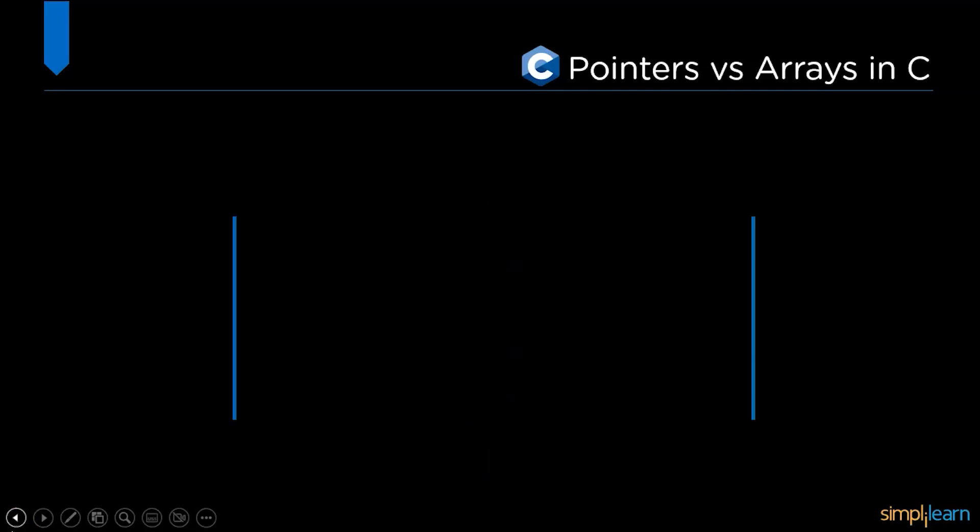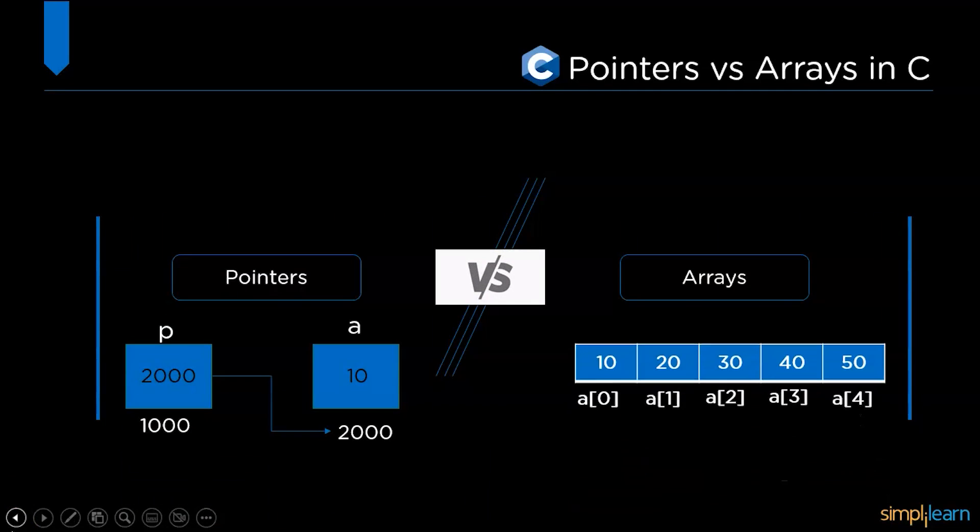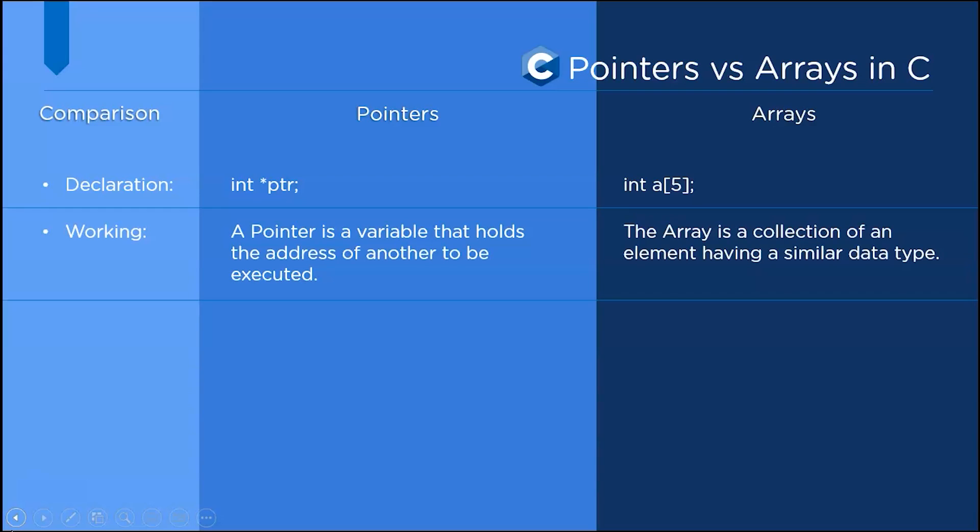Following that, let's see the basic comparison between pointers and arrays in C. First, let's see the declaration. In pointers we have int asterisk pointer - that is the pointer variable - and then in arrays we have int as a data type, a as array name, and the size 5. Then coming to the working: a pointer is a variable that holds the address of another variable to be executed, and in arrays, the array is a collection of an element having a similar data type.